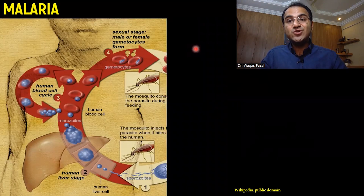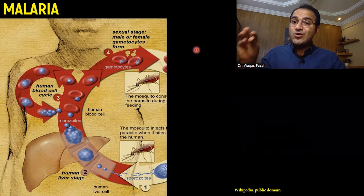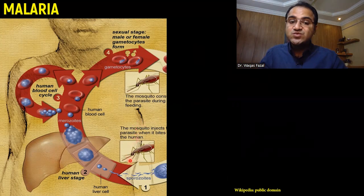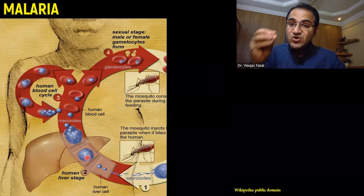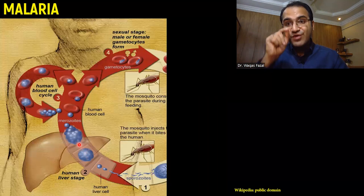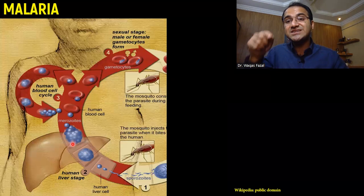Before going into the details of the treatment of malaria, we need to understand a few basic points in the life cycle. Whenever a female anopheles mosquito carrying plasmodium bites a healthy person, it injects sporozoites into the blood. These sporozoites then enter the liver cells and form schizonts, which replicate in the liver and form merozoites.